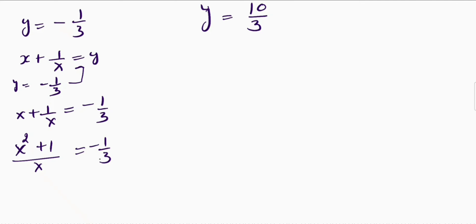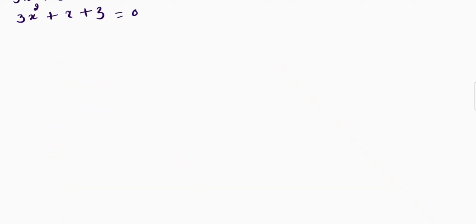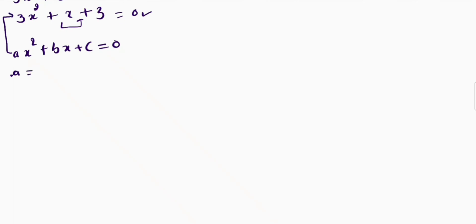I will cross multiply, which gives 3x square plus 3 equals negative x. Taking x to the left-hand side, this becomes 3x square plus x plus 3 equals 0. This is my quadratic equation. I won't be able to solve this equation with the midterm split method, so I am going to use the quadratic formula. The standard quadratic equation is ax square plus bx plus c equals 0. Comparing, I find that a equals 3, b equals 1, and c equals 3.